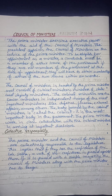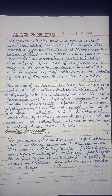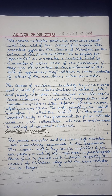To be eligible for appointment as a minister, a candidate must be a member of either house of the parliament. If they are not a member of the parliament at the time of appointment, they will have to obtain membership of either of the two houses within six months.